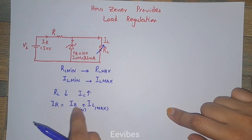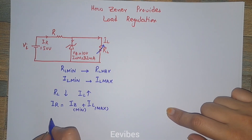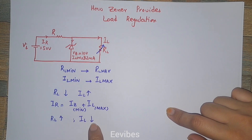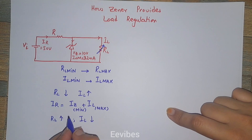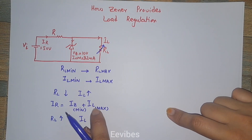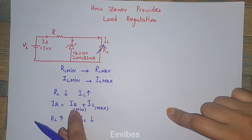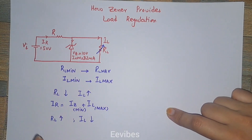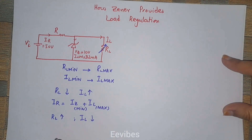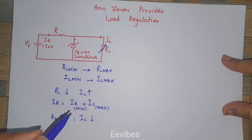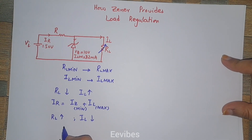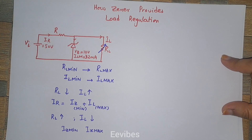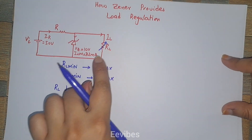Similarly, if the load resistance increases, it will automatically result in the decrease of the load current. For the minimum value of the load current, you will get the maximum current through the Zener — the Zener will allow maximum current to flow through it for providing regulation. In this way the Zener controls the amount of current that flows through it, between the range from IZ_minimum to IZ_maximum, thus providing the load regulation.